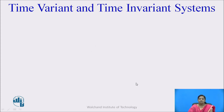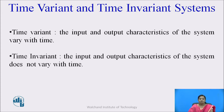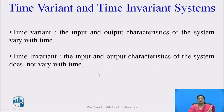Let us see which systems are called time variant and time invariant. Time variant systems are those systems in which the input and output characteristics vary with time. If the input varies with time, then the output characteristics also vary with that time — that system is called a time variant system. If the input and output characteristics do not vary with time, and there is no effect on the output with respect to a time change in the input signal, then those systems are called time invariant systems. Time invariant systems are those in which the input-output characteristic does not change with respect to time.